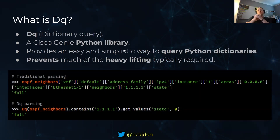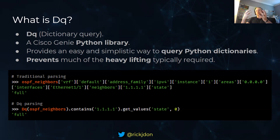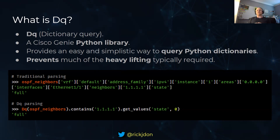So what is DQ? If we step back and look at what we typically do in network automation, a lot of the time we need to parse data. We have our data in a structured-based format, typically based on a Python dictionary. As that structured data gets larger and larger, and you get dictionaries inside dictionaries, and it's very nested, to pull the data out of that structure can be quite intensive and can be a bit of a pain.